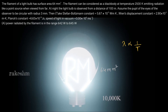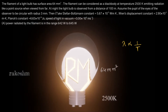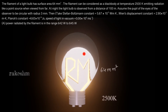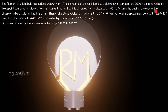In the question, the black body's temperature is 2500 Kelvin. Let us take the temperature of this filament back to 2500 Kelvin and start solving. The filament can be considered as a black body at temperature 2500 Kelvin emitting radiation like a point source when viewed from far. Assume the pupil of the observer's eye to be circular with radius 3 millimeter.